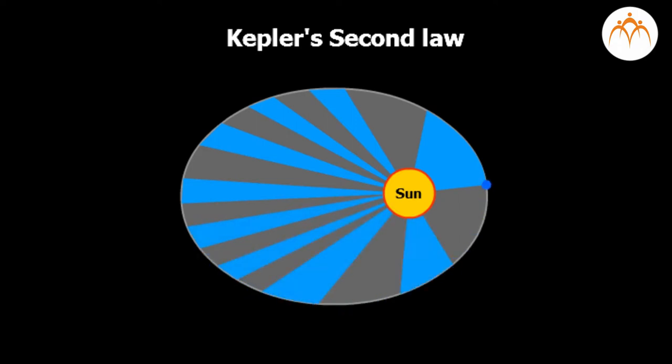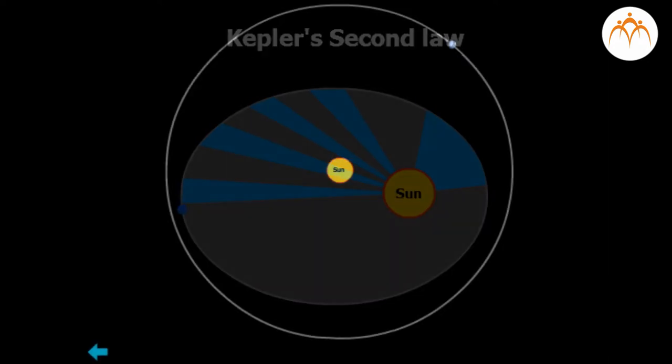You must remember, if the planet moves away from the sun, its speed is reduced.